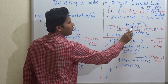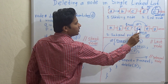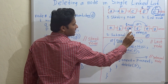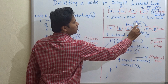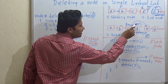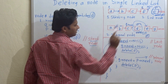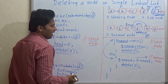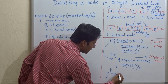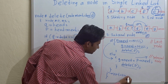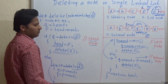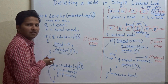If it is the last node, make Q's next equal to null and delete P. If it is not the last node — meaning it is an internal node — make Q's next equal to P's next, linking Q to P's following node, and then delete P. Finally, return the head node of the new linked list.